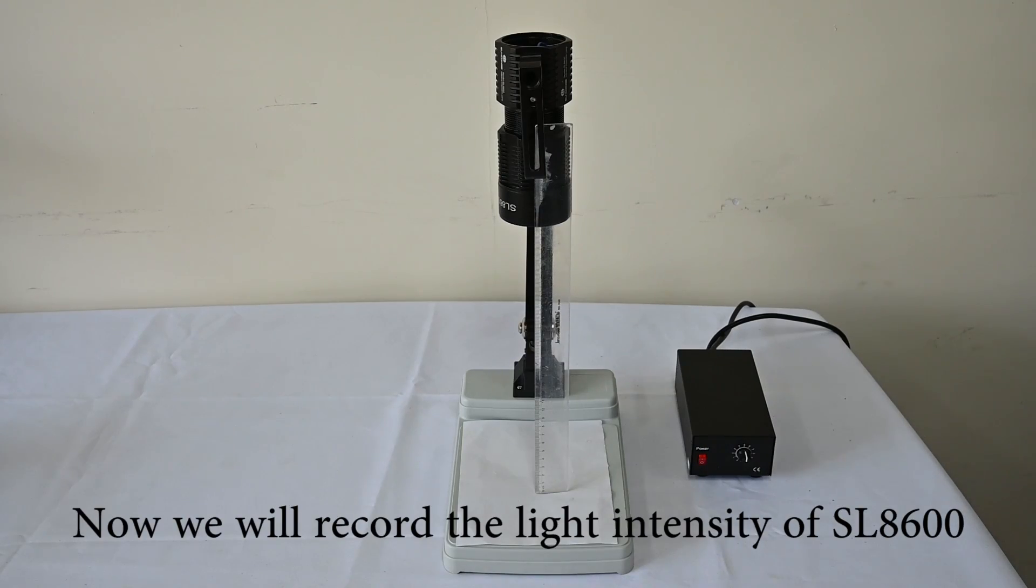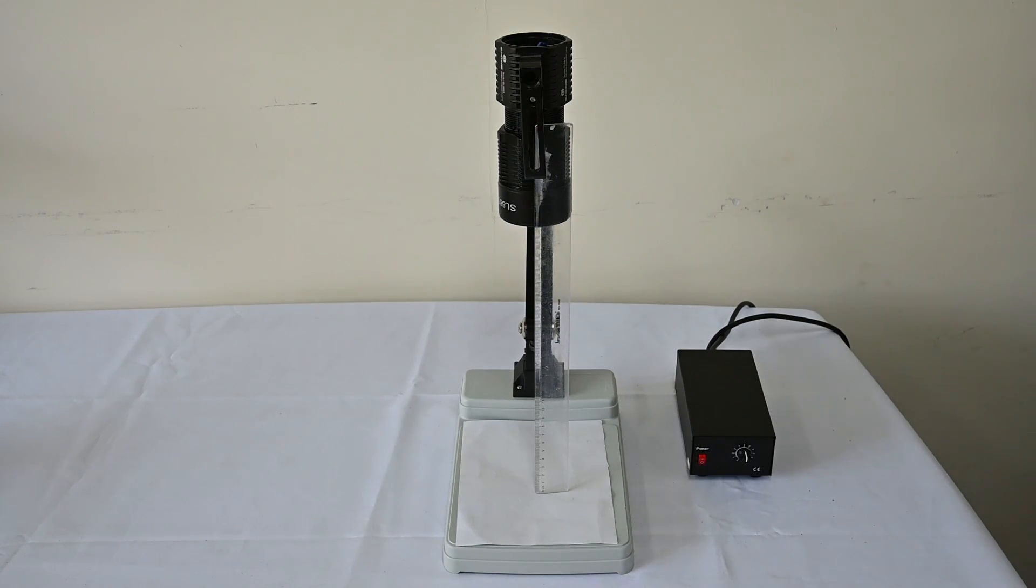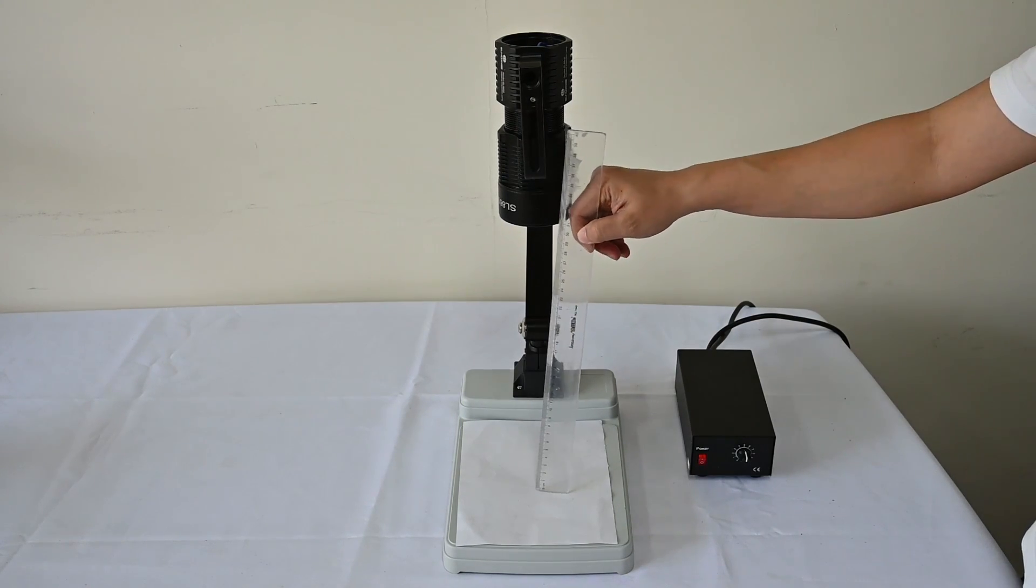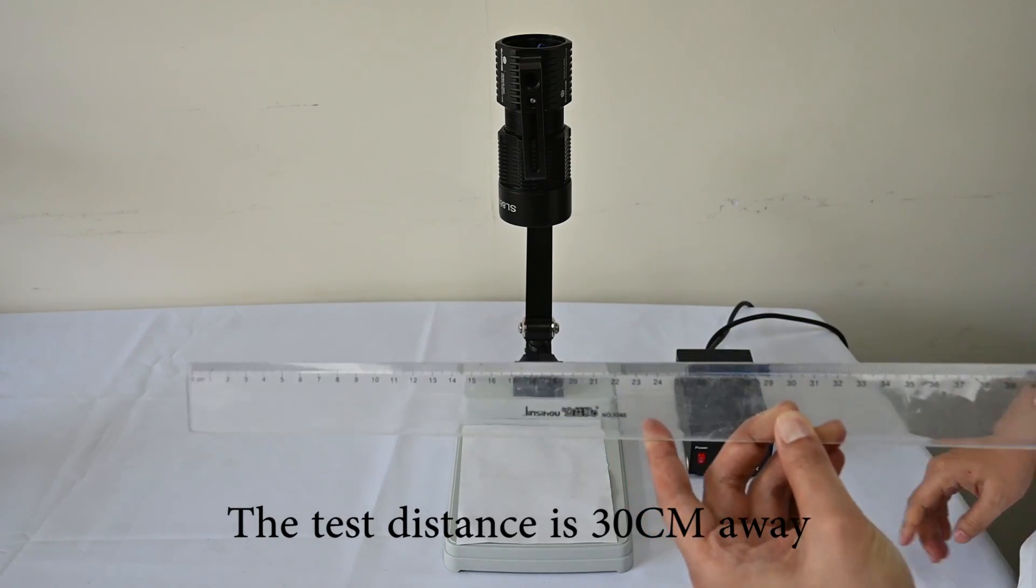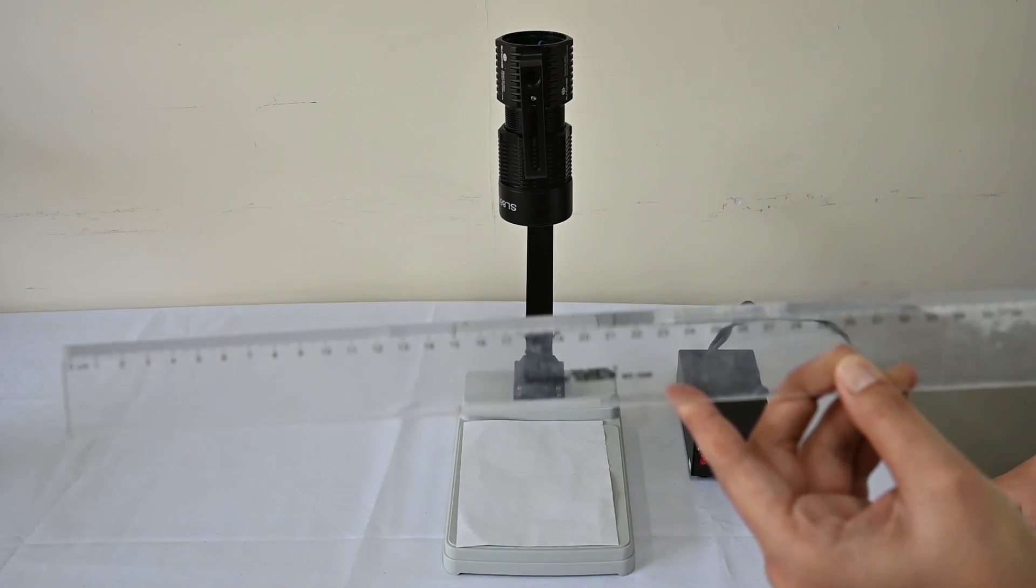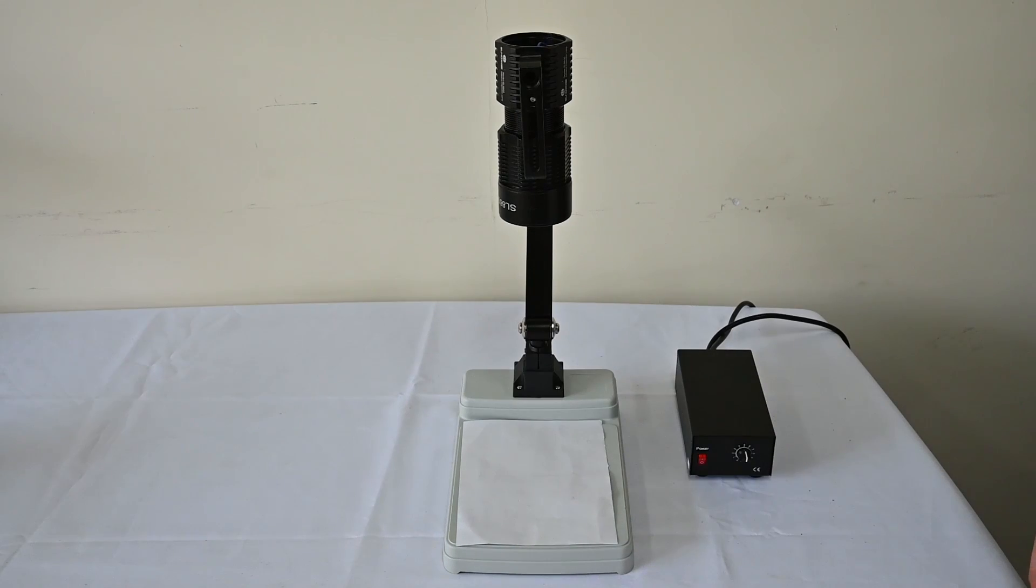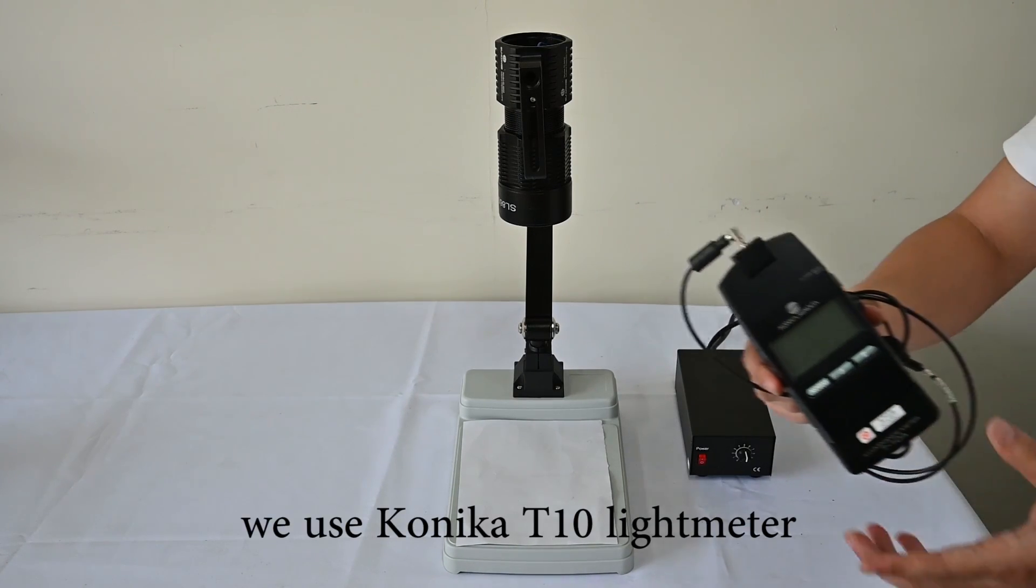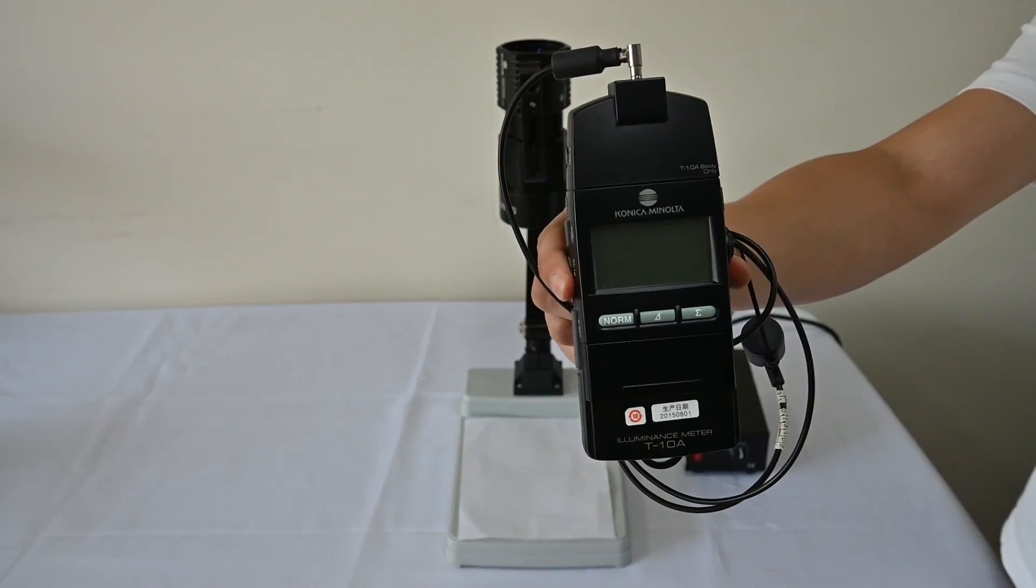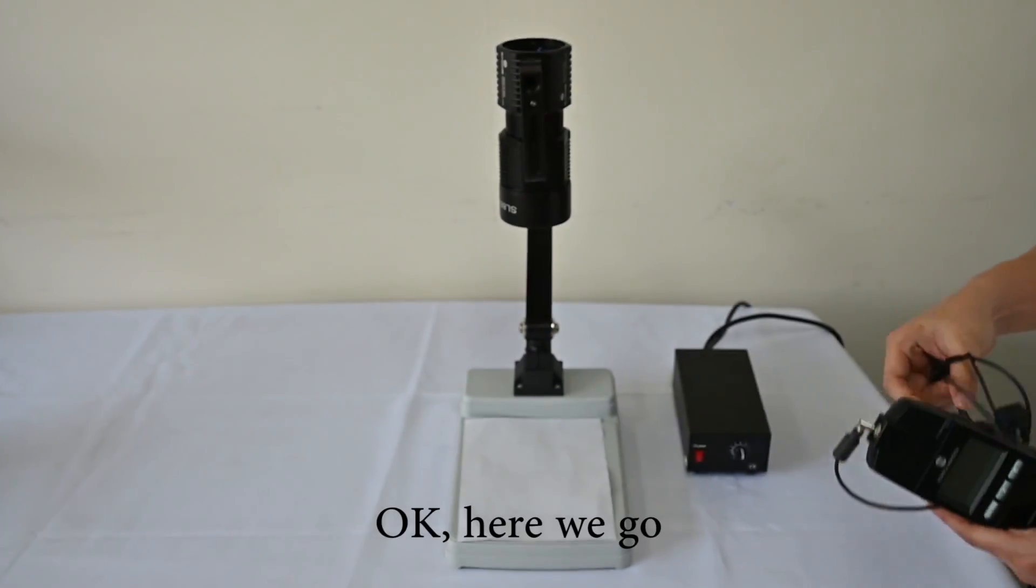Now, we will record the light intensity of SL-8600. You can see that the test distance is 30 centimeters away. And to ensure the accuracy, we use Konica T10 light meter. OK, here we go.